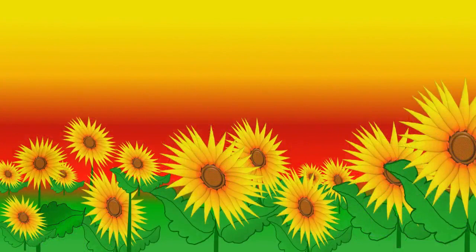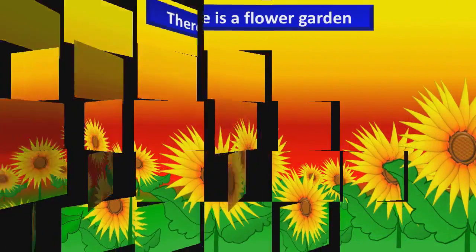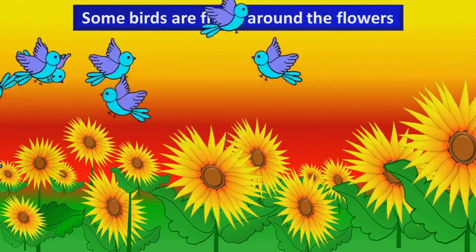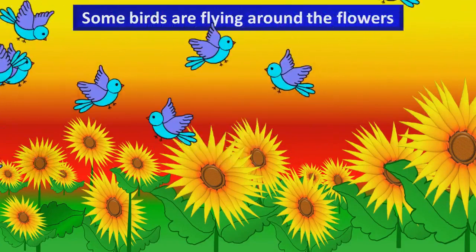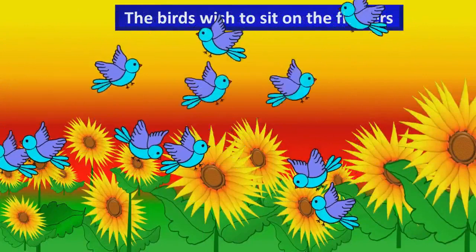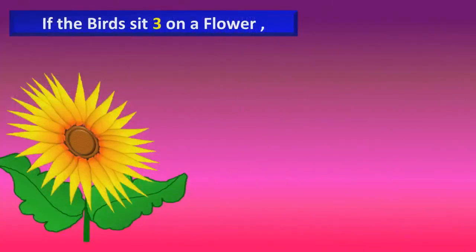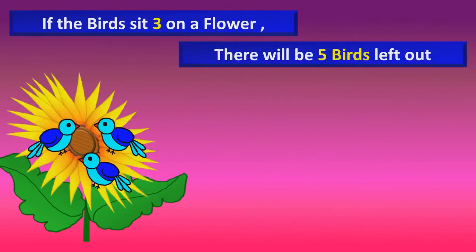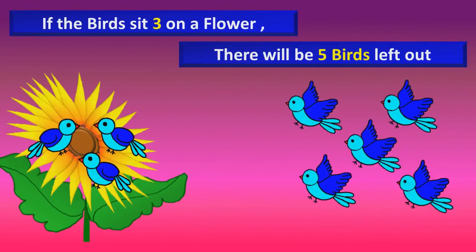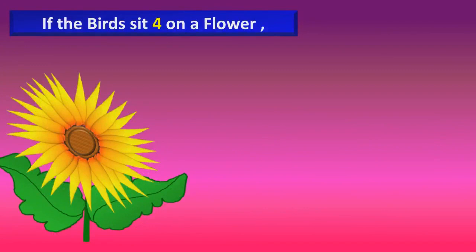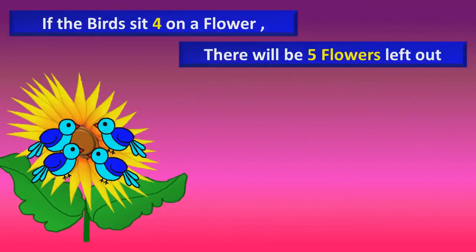There is a flower garden. Some birds are flying around the flowers. The birds wish to sit on the flowers. If the birds sit three on a flower, then there will be five birds left out. If the birds sit four on a flower, then there will be five flowers left out.